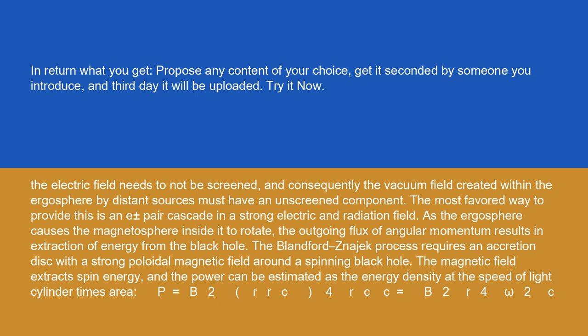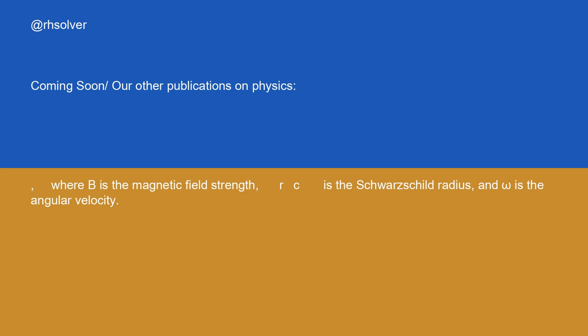The Blandford-Znajek process requires an accretion disk with a strong poloidal magnetic field around a spinning black hole. The magnetic field extracts spin energy, and the power can be estimated as the energy density at the speed of light cylinder times area: P equals B² r_c², where r_c equals B² r⁴ ω² / c. Where B is the magnetic field strength, r_c is the Schwarzschild radius, and ω is the angular velocity.